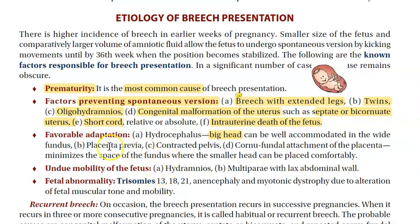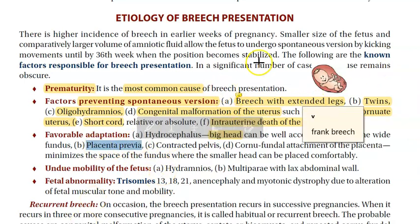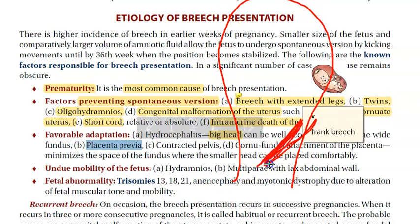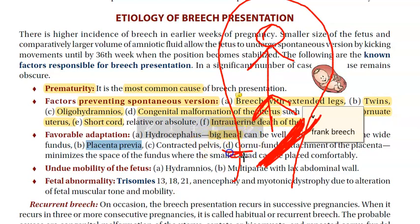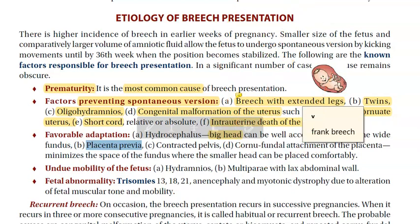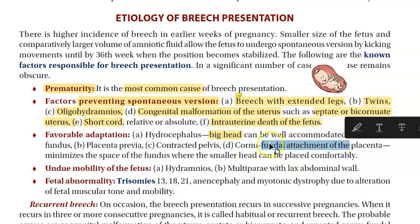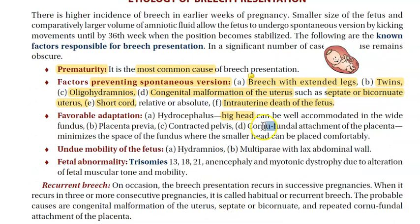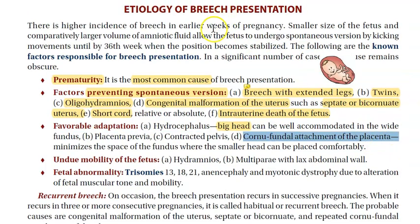Then there is placenta previa. If there is a placenta previa — the placenta is blocking the exit of the baby — at that time it is also possible for the baby to be in a breech presentation. So placenta previa is another cause under favorable adaptation. Also, contracted pelvis: the mother's pelvis is actually very small and contracted.